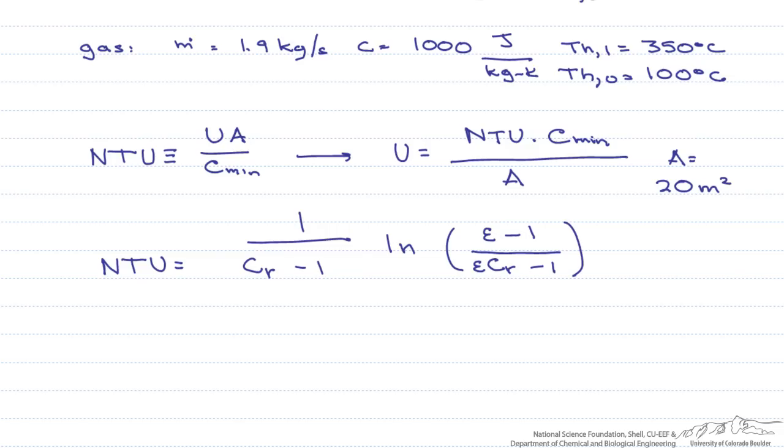The next thing we have to do is define this effectiveness, which is our heat transfer rate over the maximum heat transfer rate. We'll look at the hot fluid. This equals the heat capacity rate of the gases times the temperature coming in minus the temperature coming out, all divided by C min times T H in minus T C in.